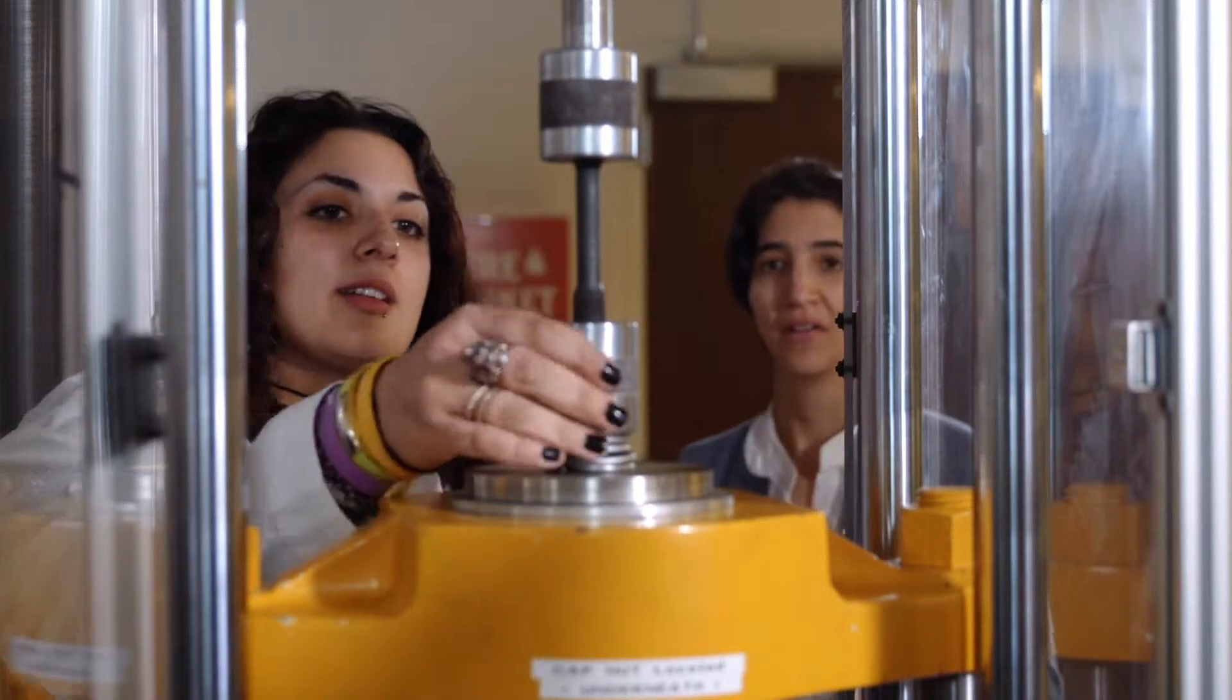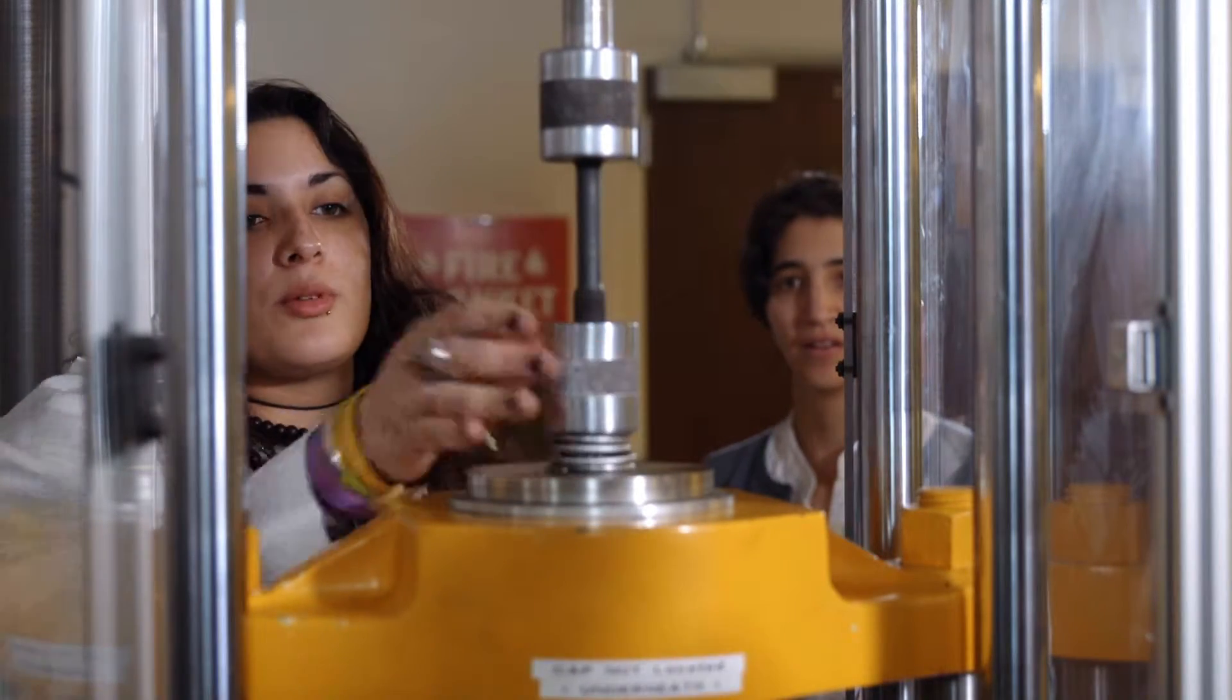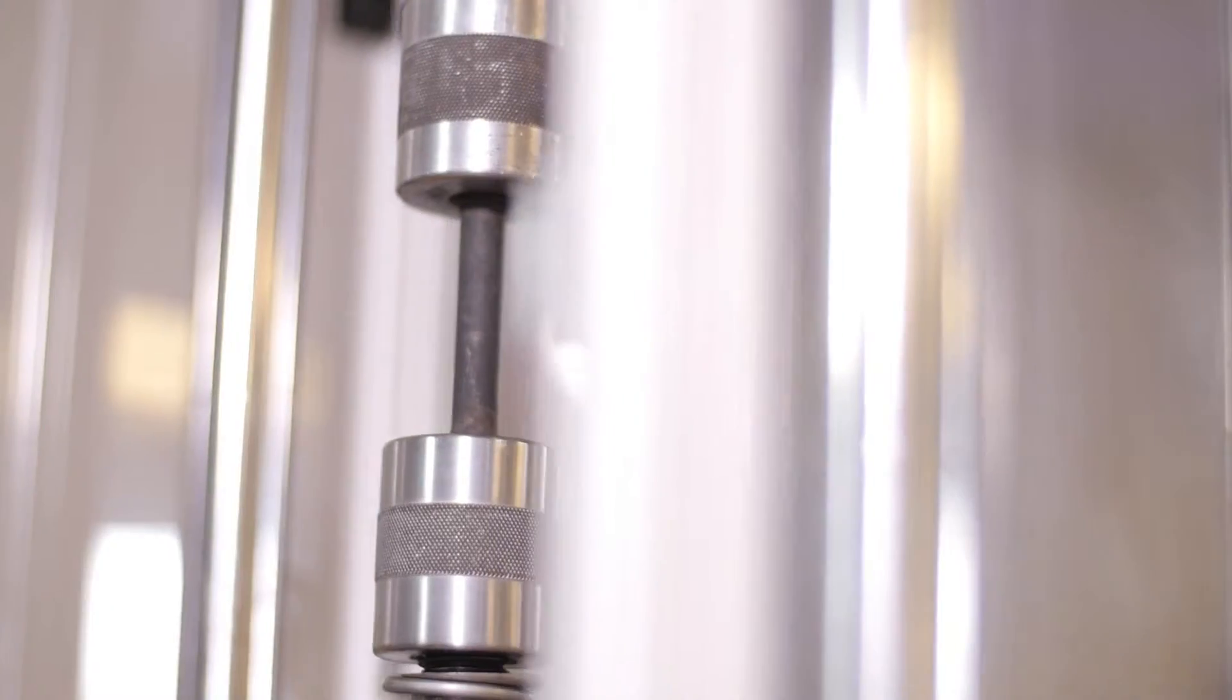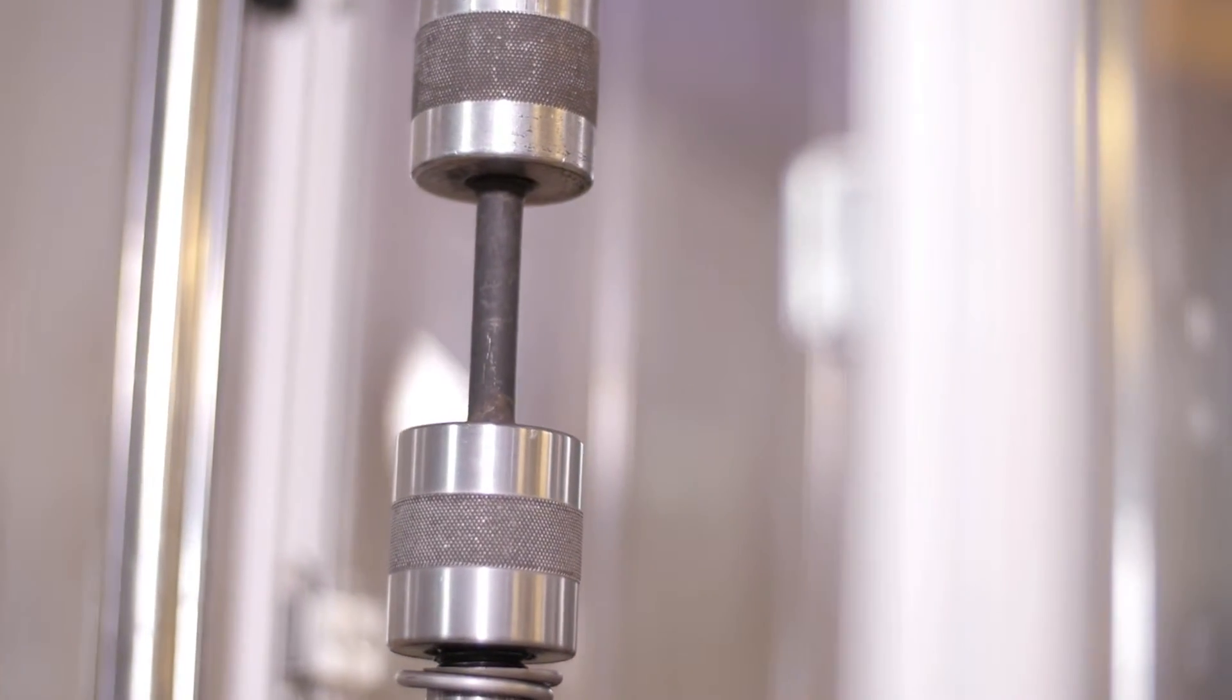Students use a tensile tester to measure the strength of steel samples. They compare identical steel samples that have been heated to a high temperature and either cooled slowly or cooled very quickly. These different heat treatments produce steel samples with dramatically different properties.